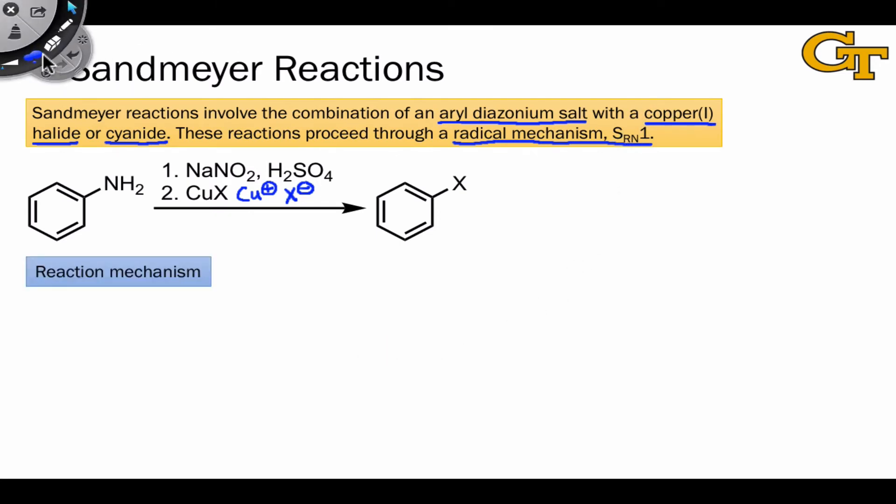To draw this mechanism, I'm going to skip over the formation of the diazonium, which we've seen in a previous video, and start from the diazonium intermediate. In practice, this would be generated from a solution of the aniline in water with NaNO2 and H2SO4 dissolved, and we would keep that at 0 degrees C to generate and stabilize the diazonium.